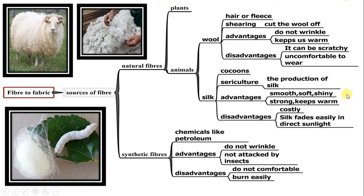Silk can be dyed easily. Disadvantages of silk: silk is very costly and fades easily in direct sunlight.